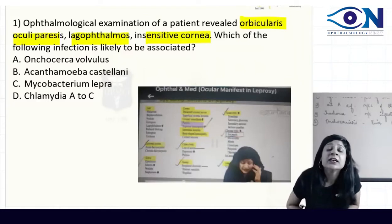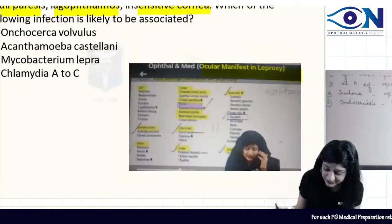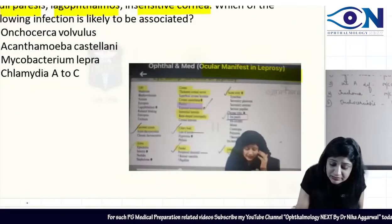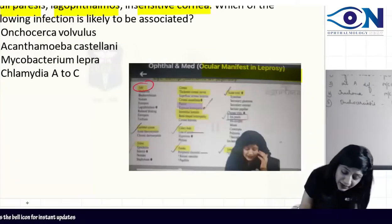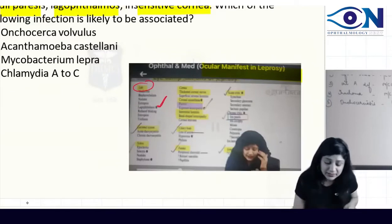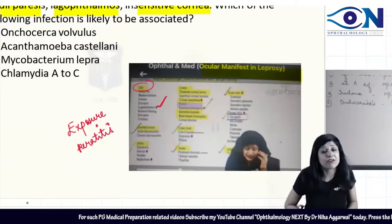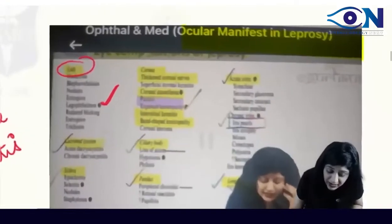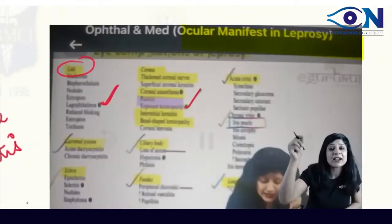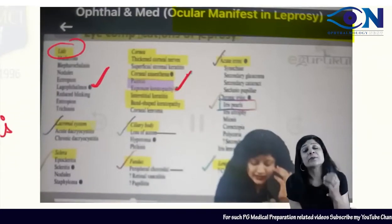This has been covered in the integrated session on ophthalmology with medicine. Looking at ocular manifestations of leprosy: in the lids we have madarosis, lagophthalmos, ectropion, and entropion. Because of lagophthalmos — when you cannot close the eye — there are chances of exposure keratitis. Decreased corneal sensations is a very well-known sign of leprosy. In the sclera, episcleritis, scleritis nodules, and leproma could be present.